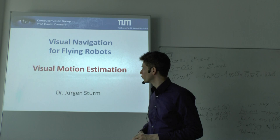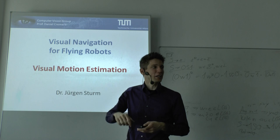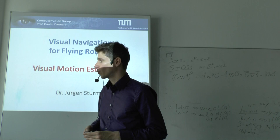Welcome again to the Visual Navigation for Flying Robots lecture. Today's topic is visual motion estimation, which is the part that makes the quadrocopter or the AR drone stay roughly at the same position without drifting away, because it can see how it moves and can compensate for it.